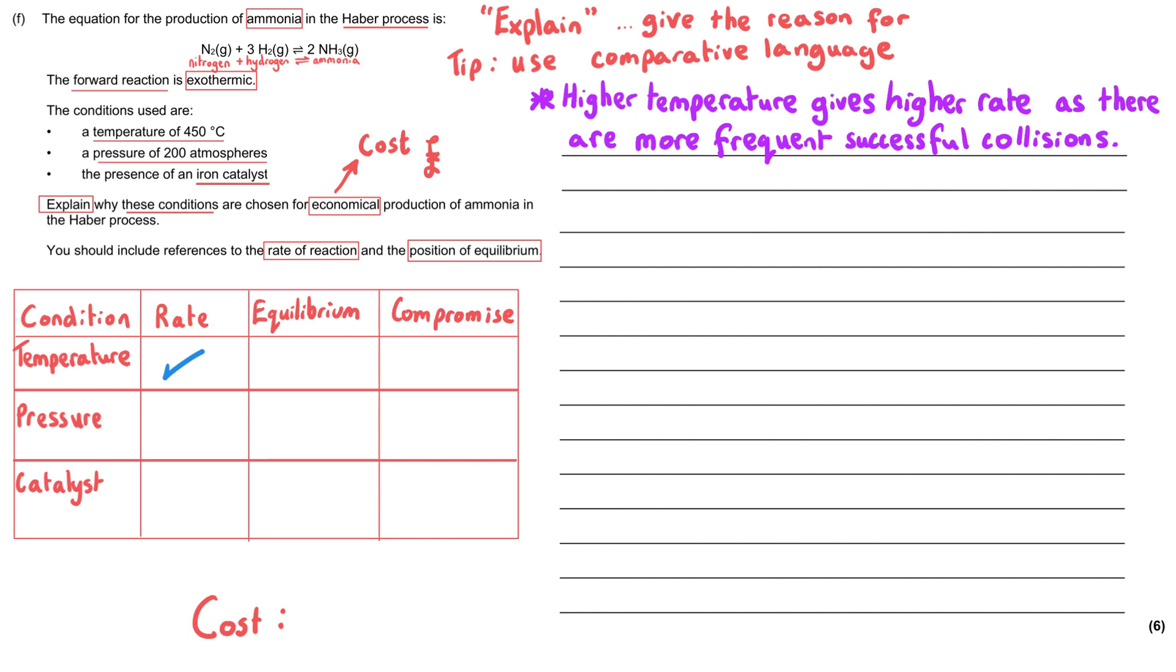Then we need to move on to talk about equilibrium. A higher temperature is going to shift the position of equilibrium to the left-hand side, and we can tell that that's the case because the forward reaction is exothermic. And what's gone unspoken here is that therefore the reverse reaction will be endothermic. So if we raise the temperature, equilibrium is going to shift in the endothermic direction which is left.